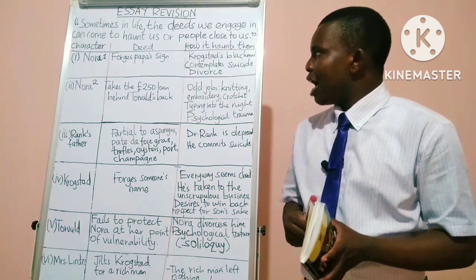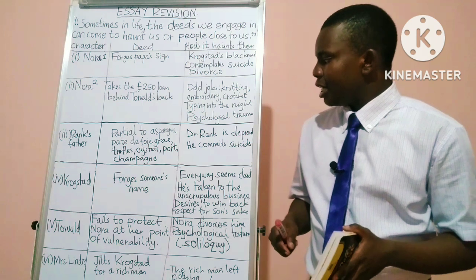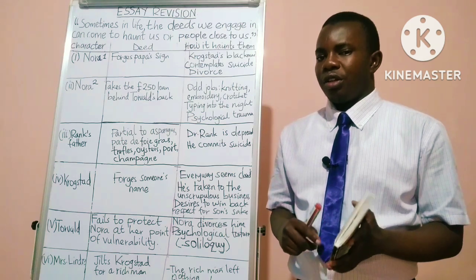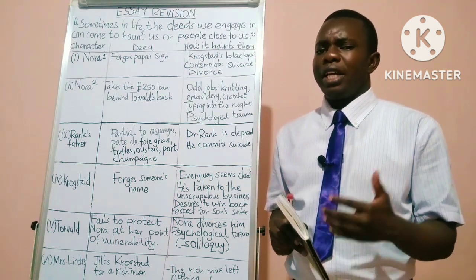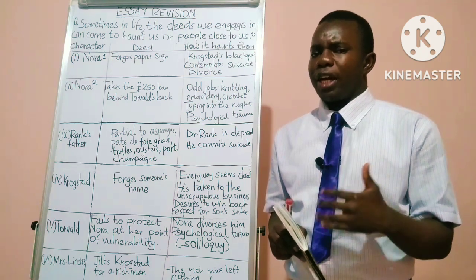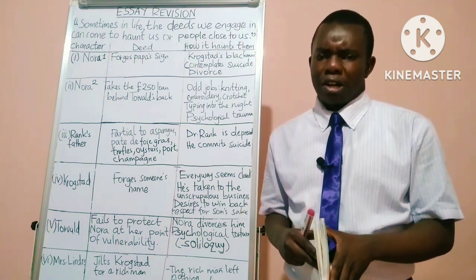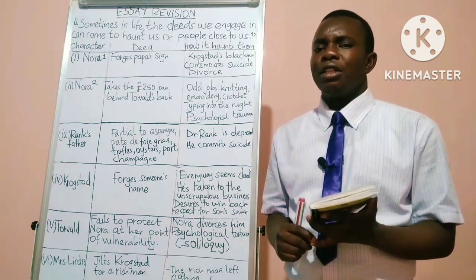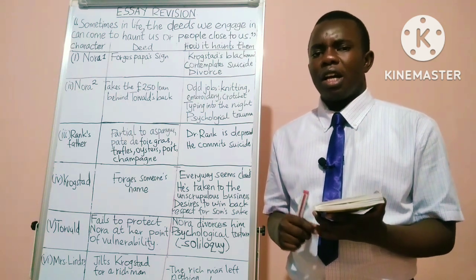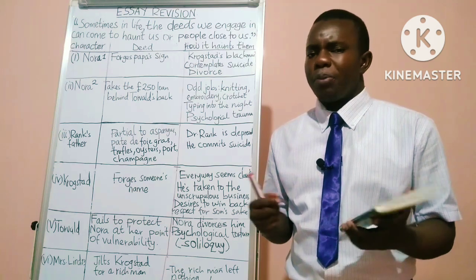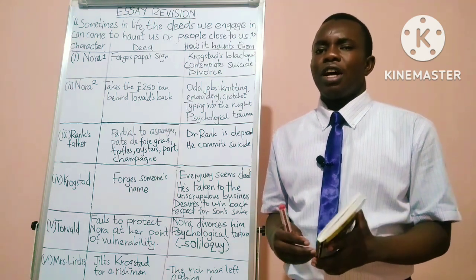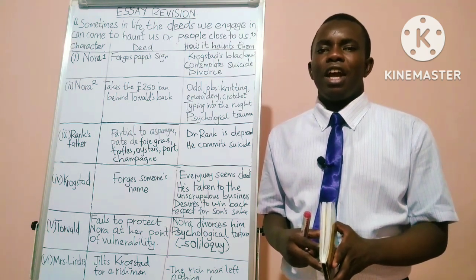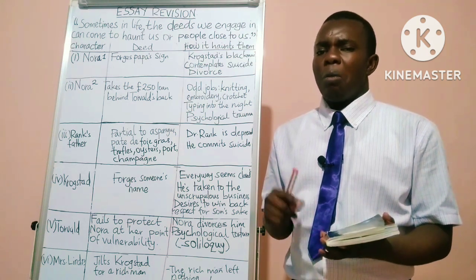Point four is Krogstad. The deed that Krogstad engages in is that he forges someone's name. The very first time we hear of Krogstad is from Dr. Rank. Hearing the news of Torvald Helmer being appointed the new bank manager, Krogstad comes to plead with him to keep him at the bank, but that does not materialise. Dr. Rank tells Mrs. Linde and Nora that Krogstad is morally deceased.